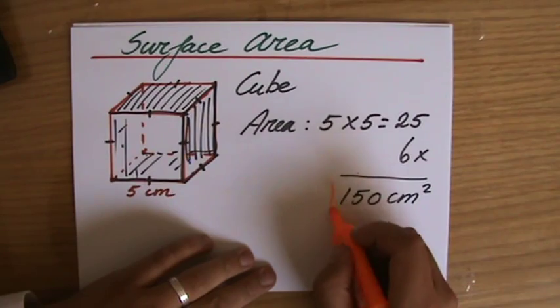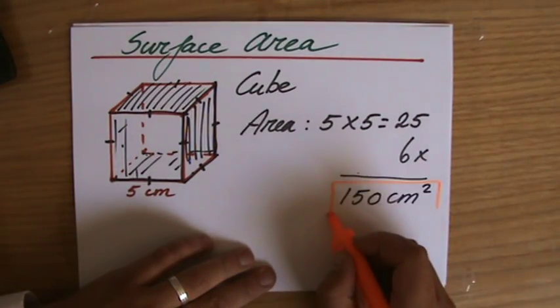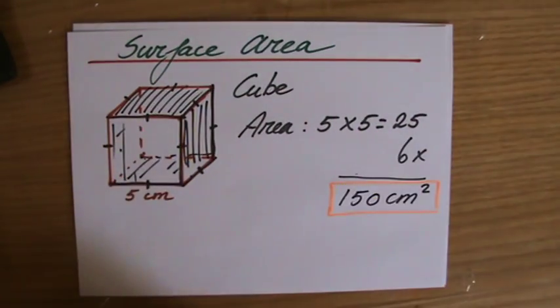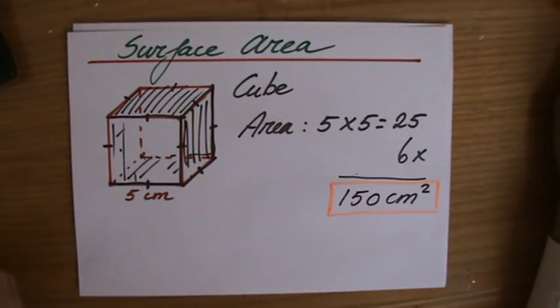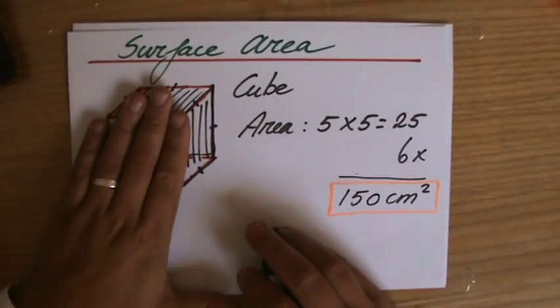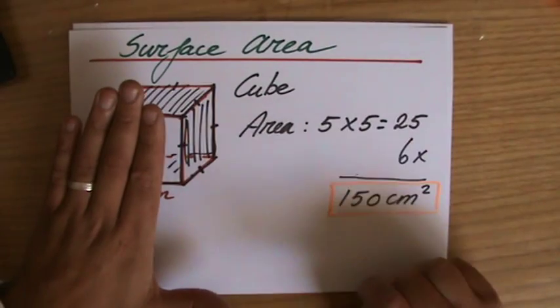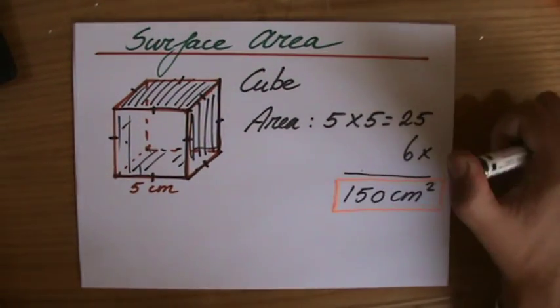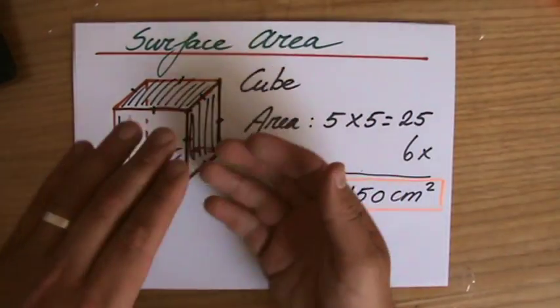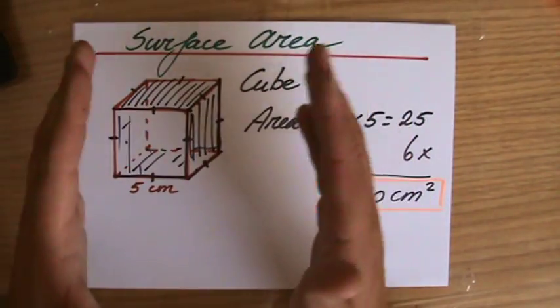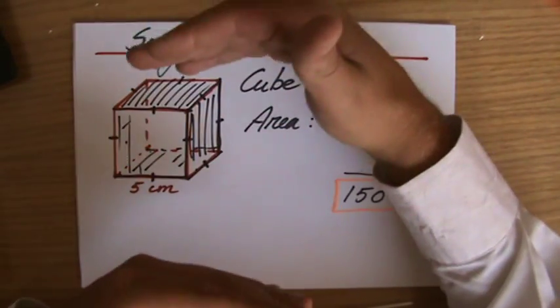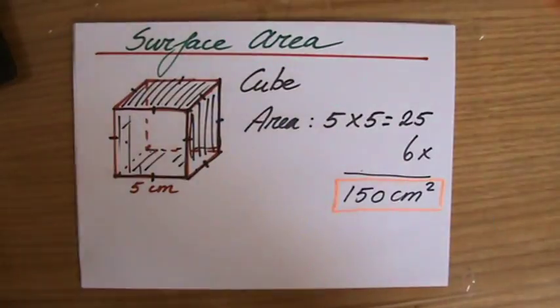All right. So surface area is the area at the surface. In this case, I could find the area of one face, of one side, and multiply by six. Why? Because they are all the same. The top and the bottom are the same, the sides are the same. Back and forth—they're all the same. They all have the same area.